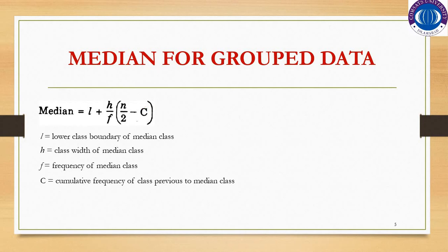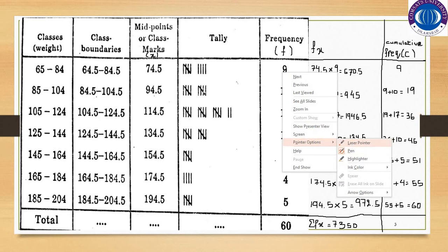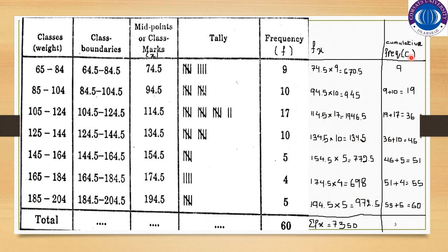In this formula, c is the cumulative frequency. The cumulative frequency column is constructed as follows: the first value is 9 (taken from the frequency column). The next is 9 + 10 = 19, meaning cumulative frequency up to class 85–104 is 19. Then 19 + 17 = 36, meaning cumulative frequency up to class 105–124 is 36. The total cumulative frequency at the last class equals 60.